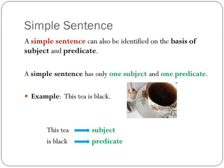Let's look at the example: This T is black. "This T" is the single subject of the sentence. "Is black" is the single predicate of the sentence.